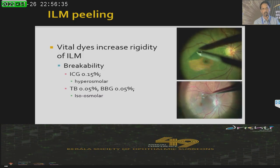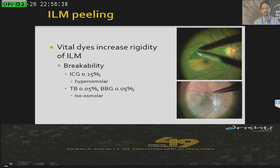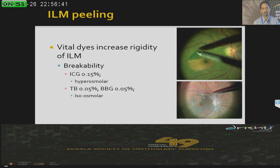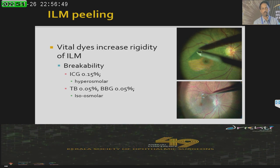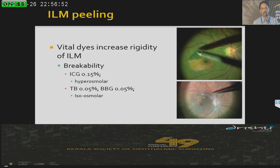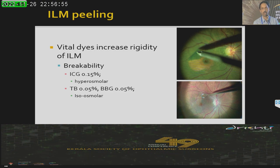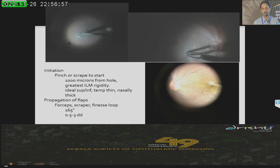The ILM is a transparent structure, so to visualize it, we need to use a dye like ICG, trypan blue, or brilliant blue to stain the ILM. Once stained — just like the anterior capsule — these membranes get a little rigid and more breakable, which helps us in peeling them.